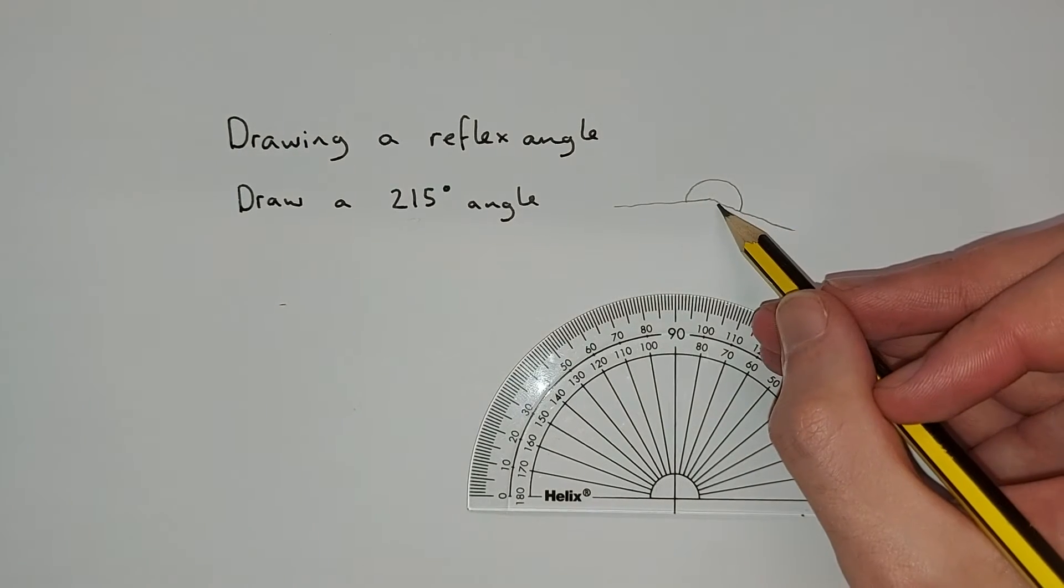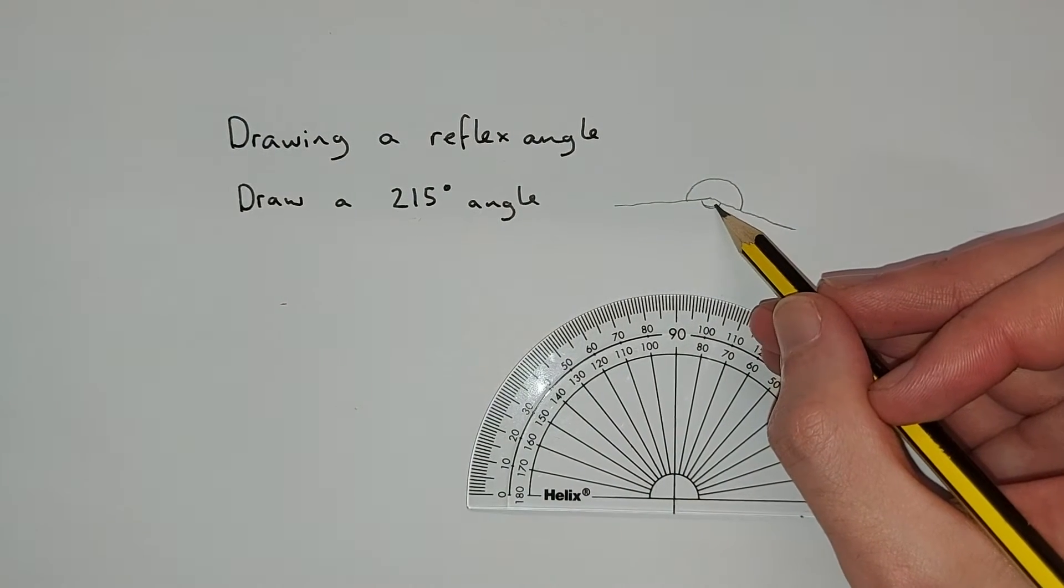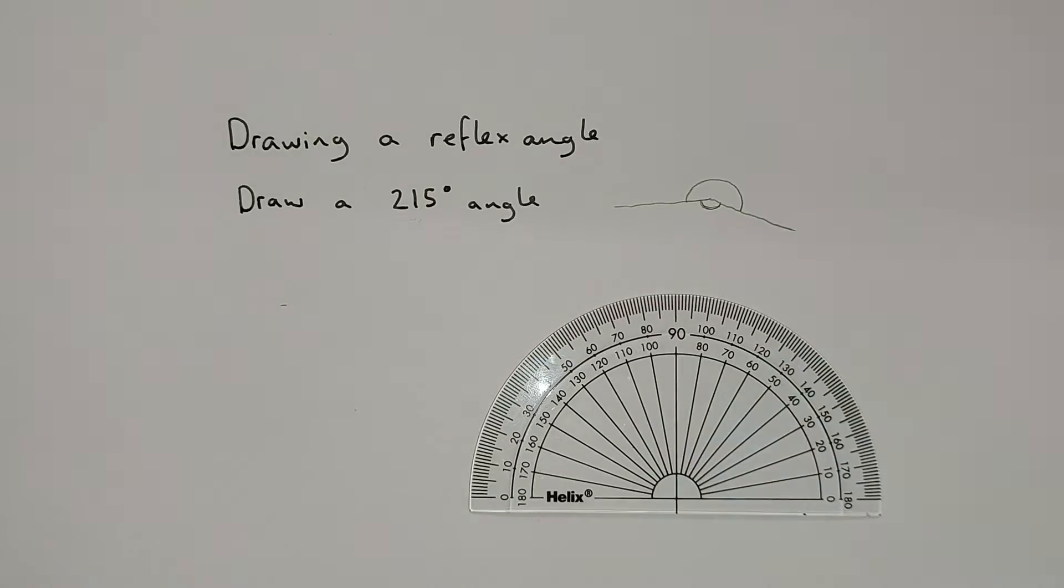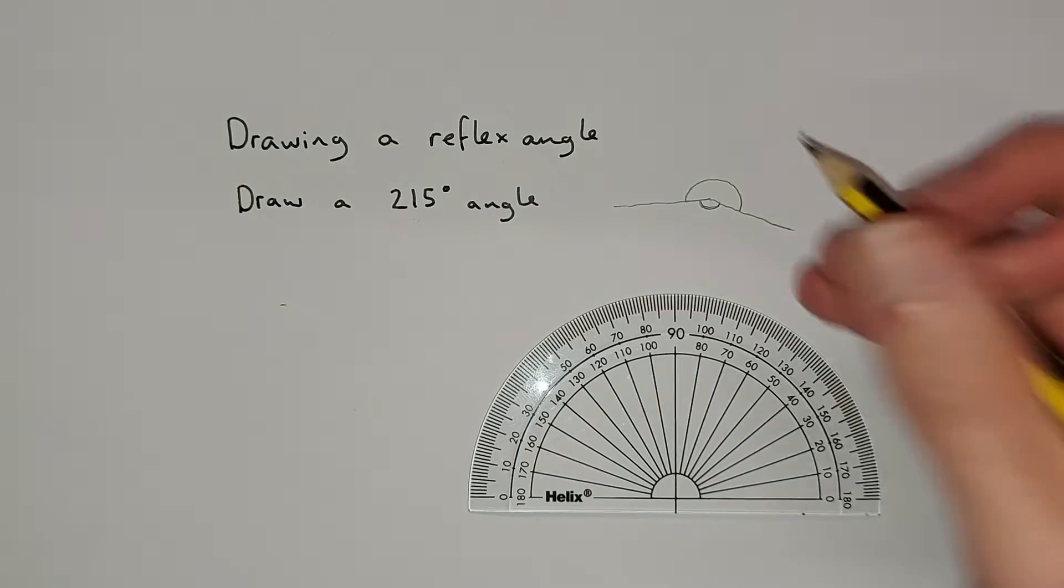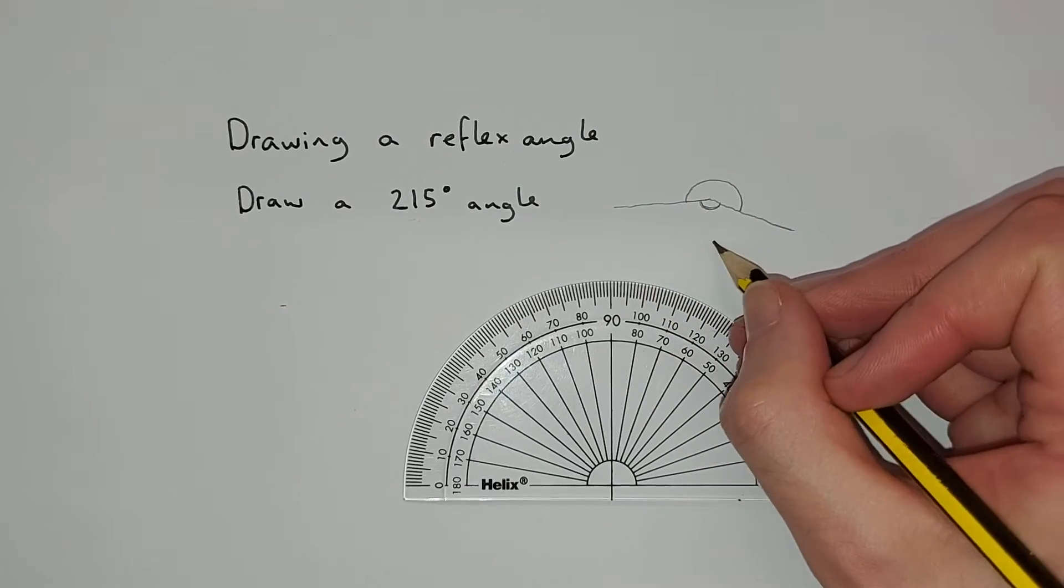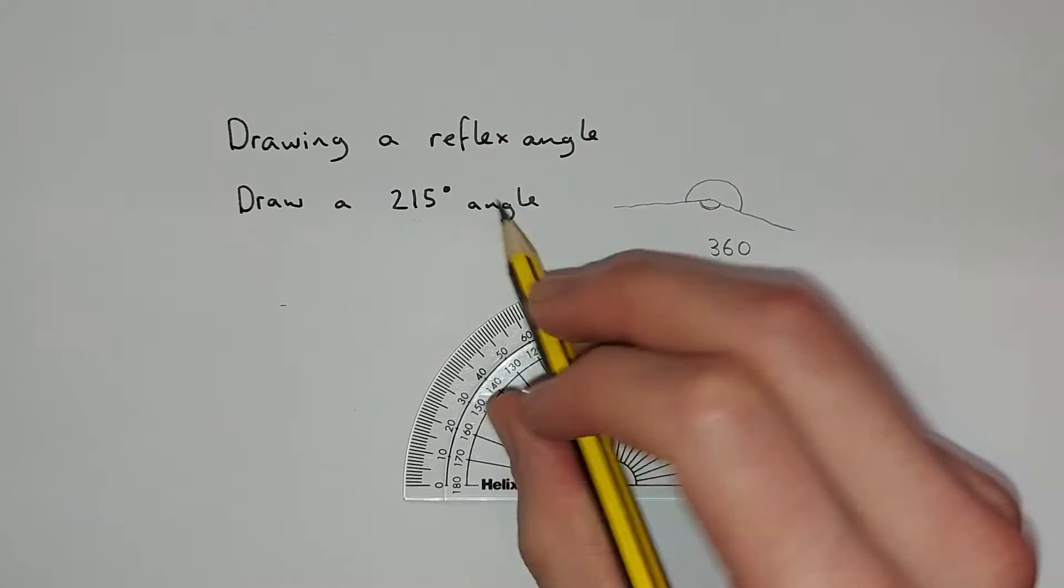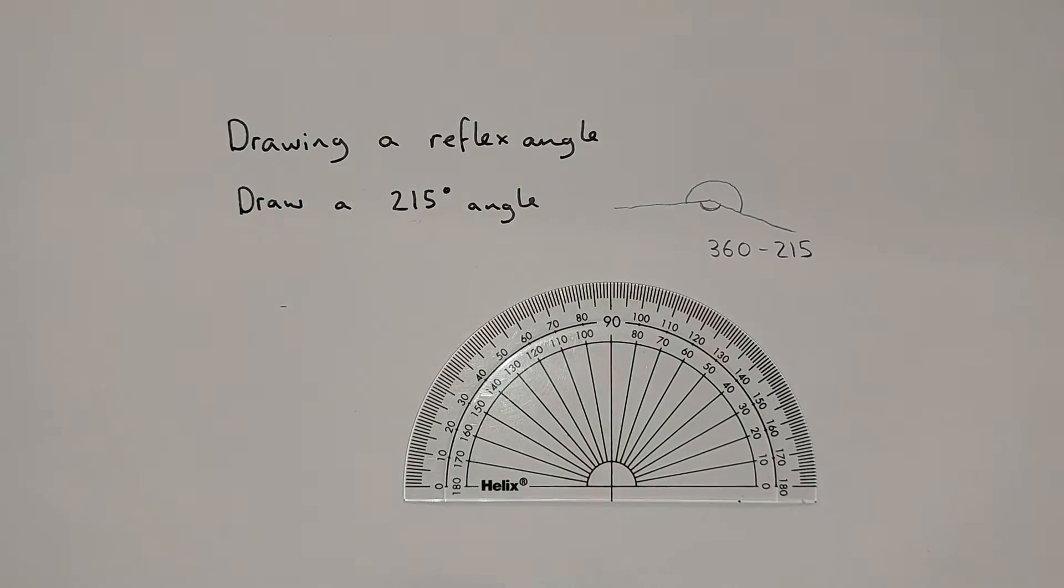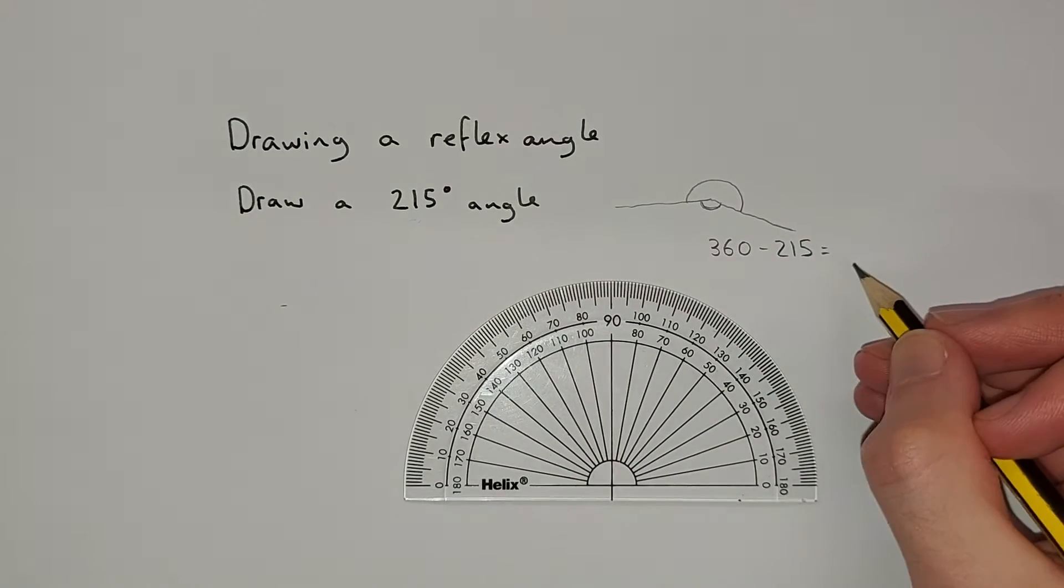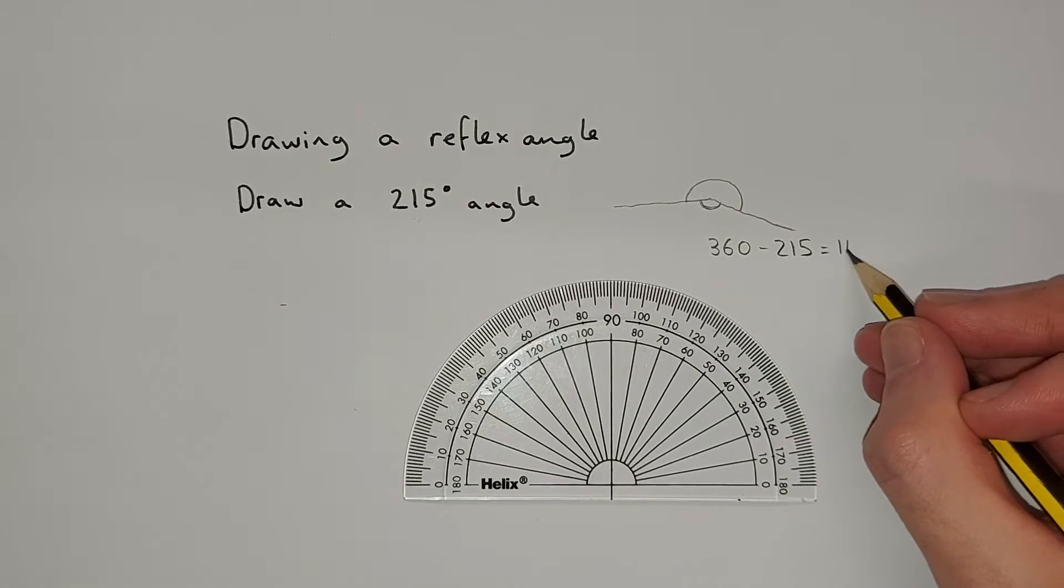What we could do is we could work out what this little angle is here, this obtuse angle. We can measure that because it's less than 180 degrees. So the way you would work that out is you take the whole circle, that's 360, you would take away the angle we're looking for or the angle we're going to measure to get an answer of 145.